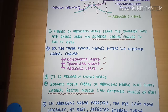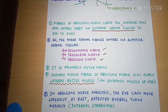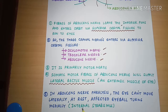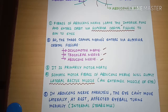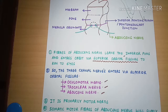If the abducens nerve becomes paralyzed, the eye cannot move laterally because the abducens nerve supplies the lateral rectus muscle. At rest, the affected eyeball turns medially, which is called internal strabismus. This is because without the abducens nerve, the lateral rectus muscle no longer functions and the eyeball turns internally.